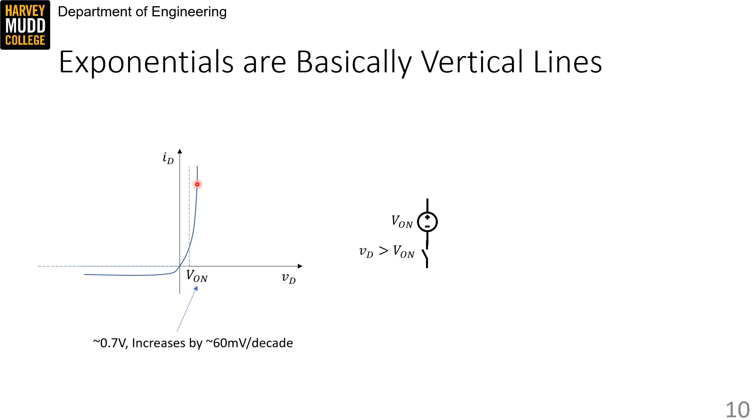We represent this approximation in a circuit as a switch in series with a voltage source, which is how the model gets its highly creative name of the switch voltage source model. The switch closes if the diode voltage becomes higher than VON, at which point the diode acts like a small voltage source. Voltage sources provide the same voltage regardless of how much current is pulled out of them, so the voltage source is responsible for the vertical line on the IV curve.